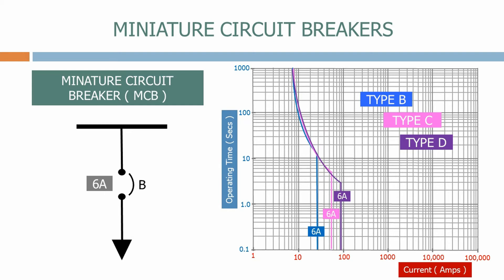For most circuits the type B MCB would be okay but when we are dealing with motors, pumps or transformers that will demand higher current levels when they are switched on we might use a type D circuit breaker.